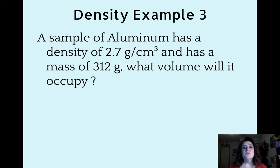Example 3. A sample of aluminum has a density of 2.7 grams per centimeter cubed and has a mass of 312 grams. What volume will it occupy?